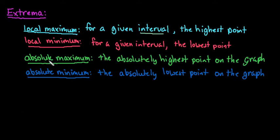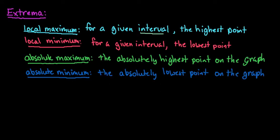The absolute maximum occurs if it's the highest point on the graph — the absolutely highest point — and there is no point that goes higher than that. Then you have an absolute maximum. And an absolute minimum occurs if you have the absolutely lowest point on a graph.